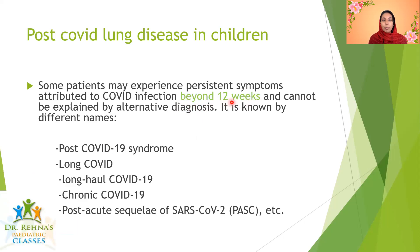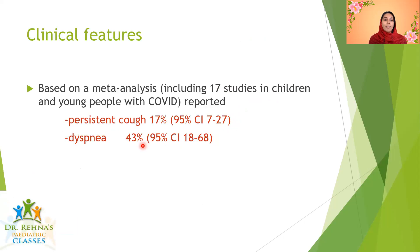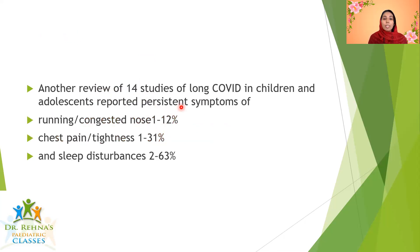Don't label it by seeing a four-week-old child or a post-COVID adult at four weeks; it's around 12 weeks. The prevalence of post-COVID-19 infection in adults varies, ranging from 5% to 80%. For children, long COVID data is limited. Based on a meta-analysis including 17 studies, persistent cough was seen in around 17% of children and dyspnea in 43%. Another review of 14 studies showed persistent running or congested nose in 1–12%, chest pain or tightness in 1–31%, and sleep disturbances in 2–63%.